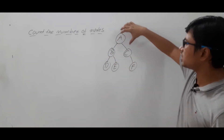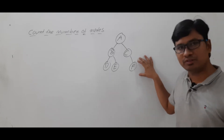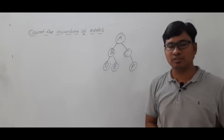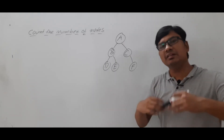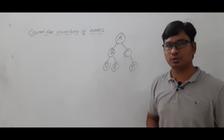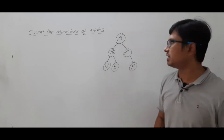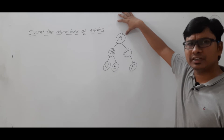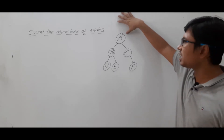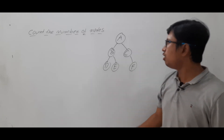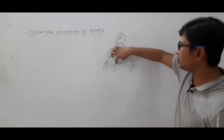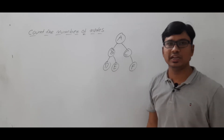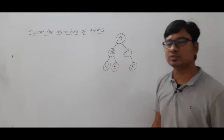The total number of nodes is equal to the number of internal nodes plus the number of leaf nodes. Instead of separately counting leaf nodes and internal nodes and then adding, we will directly write the pseudo code for counting the number of nodes in this binary tree. How many nodes are there? 1, 2, 3, 4, 5, 6 nodes. So whatever pseudo code I write, if I trace it on this tree, I should get the value 6.